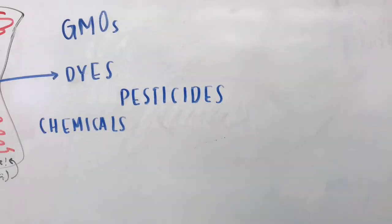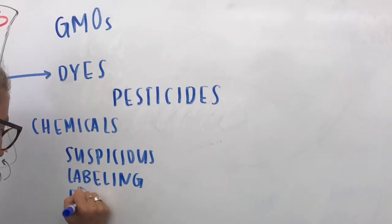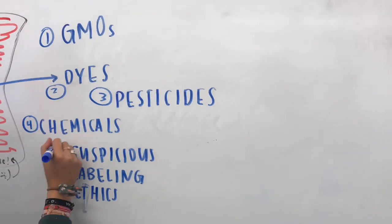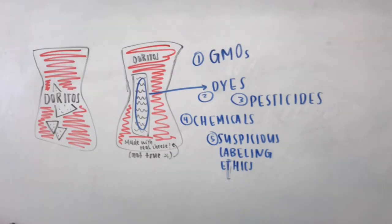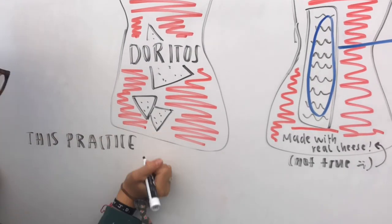GMOs are organisms that have been artificially manipulated in order to get a larger yield, reduce harvest failure and increase the size of an organism. While this sounds like an efficient process, not many studies have been done to confirm the lack of health risks associated with GMOs.